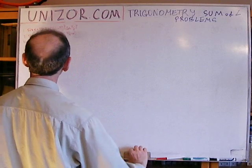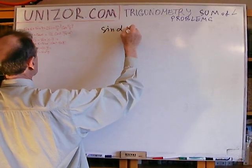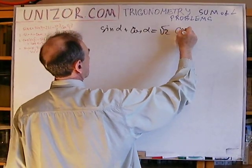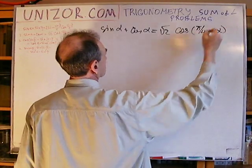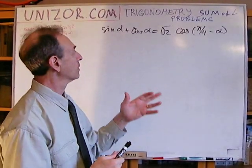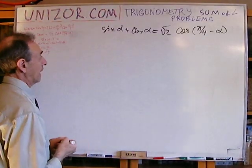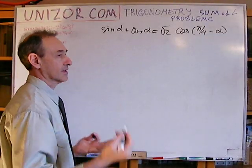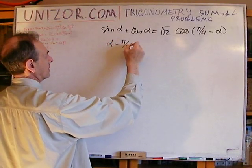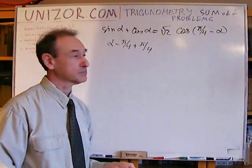Next: sine alpha plus cosine alpha equals square root of two times cosine of pi over four minus alpha. Again, it actually invites you to think about how can I represent alpha if I want to get something like this. What comes to my mind is the representation of alpha in this format. This is still alpha — subtract pi over four and add pi over four.